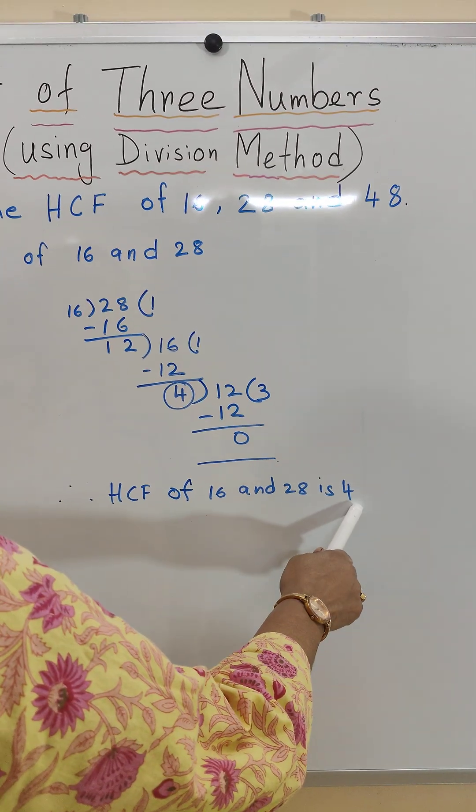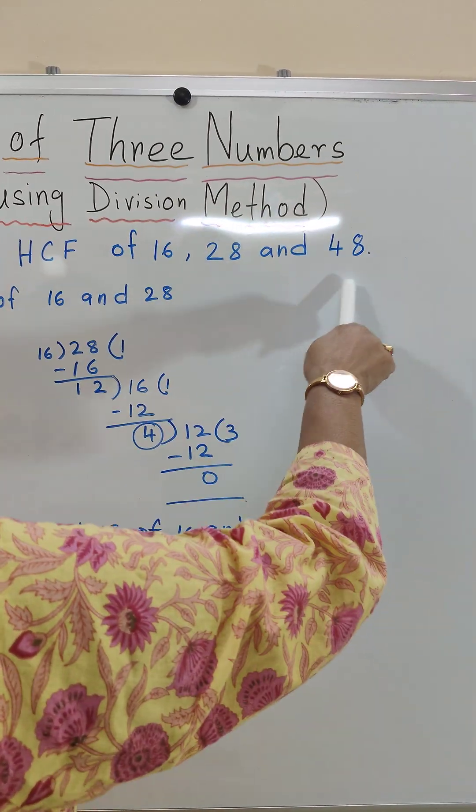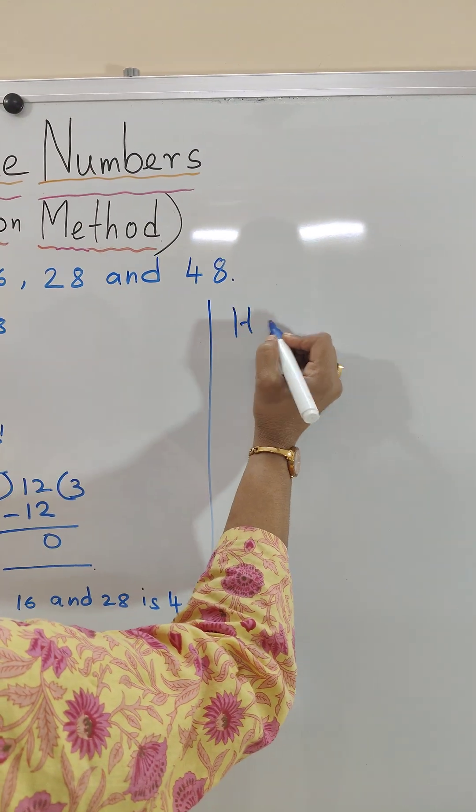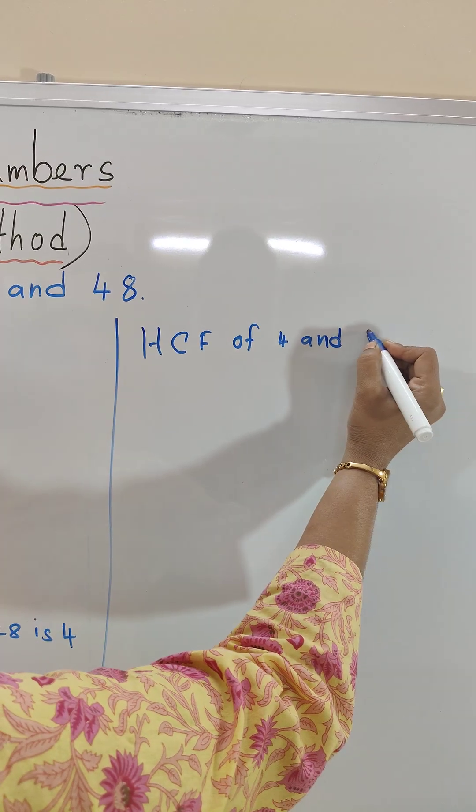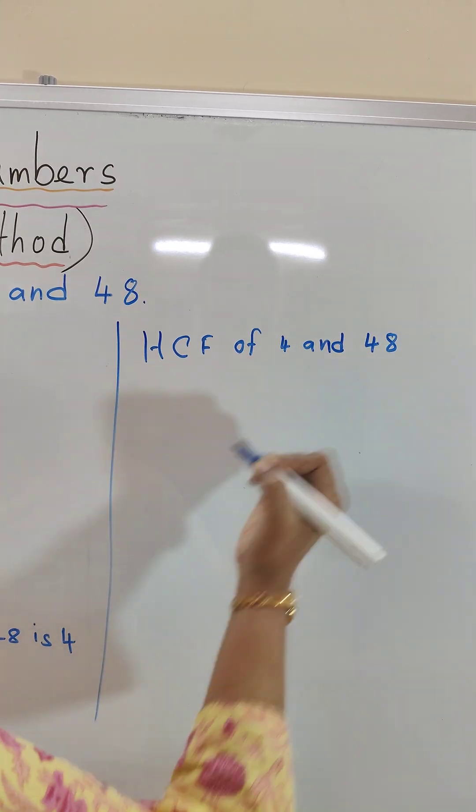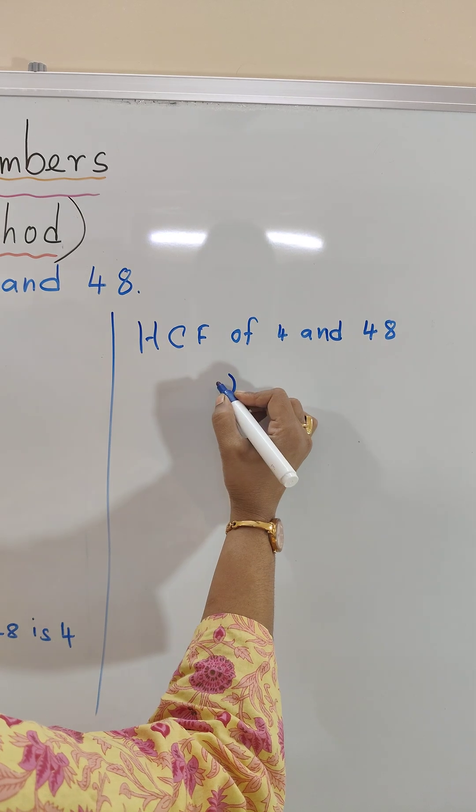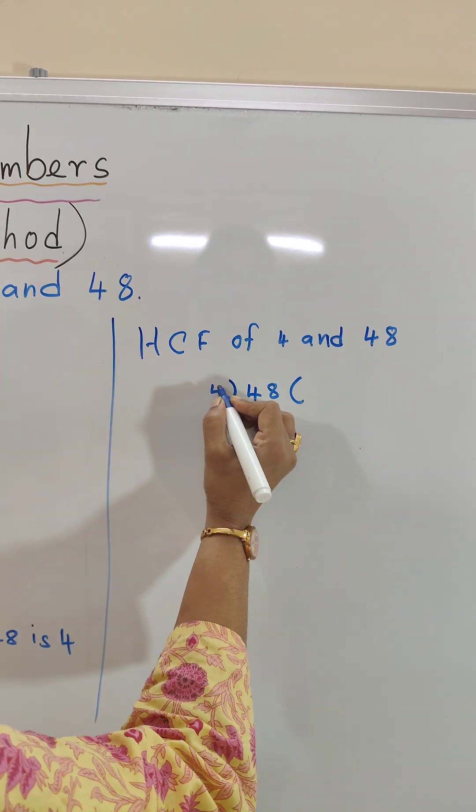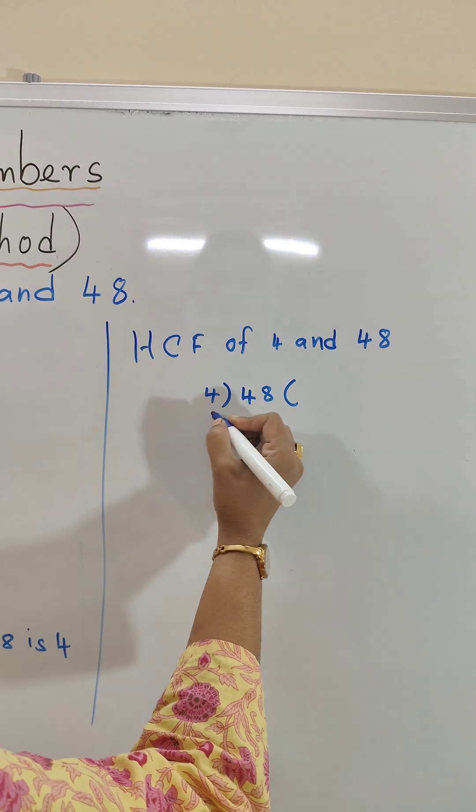Now we will find the HCF of 4 and the last number 48. So let's start finding the HCF. HCF of 4 and 48. The small number is 4 and the bigger one is 48. So we will divide 48 by 4.